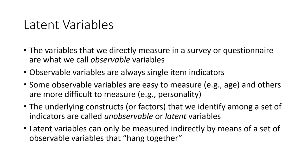There are also a set of unobservable variables that we refer to as latent variables. Variables that we directly measure in a survey or questionnaire are observable variables — you can observe them, see them, and measure them directly. Observable variables are always single-item indicators: if you have a question in a survey, that's one question and it's referred to as a single-item indicator, measuring something with just a single question or statement.